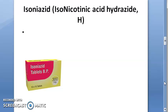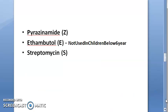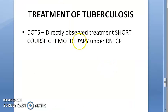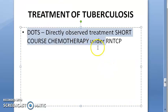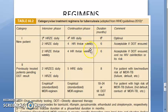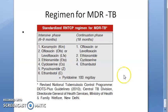Isoniazid is isonicotinic acid hydrazide. Rifampin, pyrazinamide, and others have also been covered. Recommended doses have been mentioned, and in the next video we will look at DOTS therapy regimens and the regimen for multi-drug resistant TB.